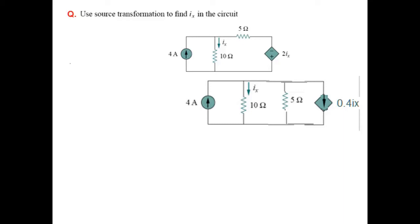The voltage 2 divided by 5 gives 0.4Ix current direction. This positive sign is here, so the current direction is going down, and 5 ohm resistance comes in parallel.